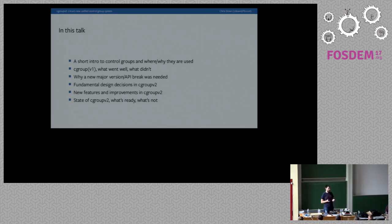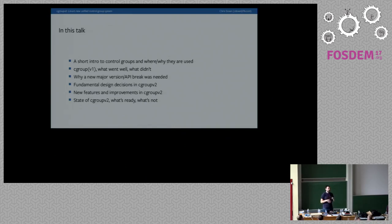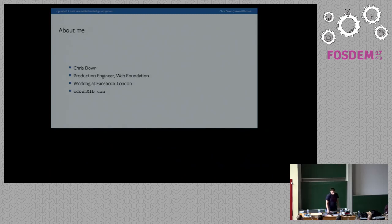Cgroupv1 is currently in mostly maintenance mode, while cgroupv2 is in active development. They share the same core — it's mostly the user-facing API which is different. I'm also going to go over what's still to be done and what's already been done. The core of cgroupv2 is already stable since kernel 4.5, but there's a whole bunch of work we want done. A lot of the core work has been to enable future features in cgroups which we're already working on.